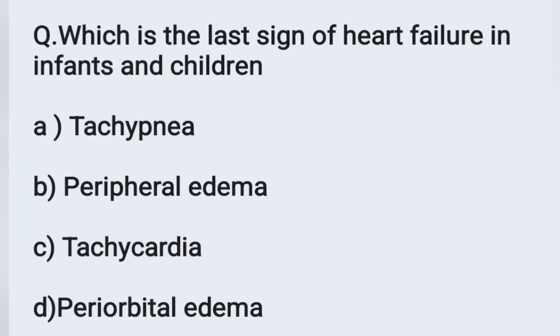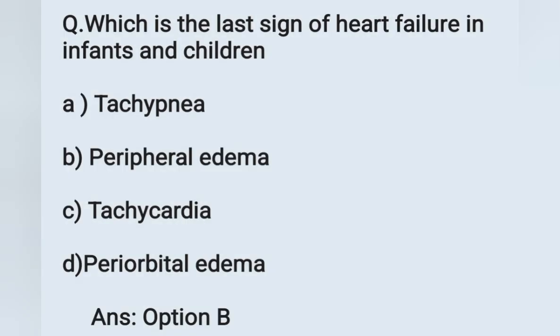Next question: Which is the last sign of heart failure in infants and children? Option A: tachypnea, option B: peripheral edema, option C: tachycardia, option D: periorbital edema. The last sign of heart failure in infants and children is peripheral edema. Option B is the correct answer. Due to heart failure, blood flow to the kidney decreases, causing sodium and water reabsorption, resulting in peripheral edema.